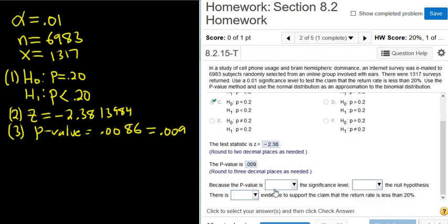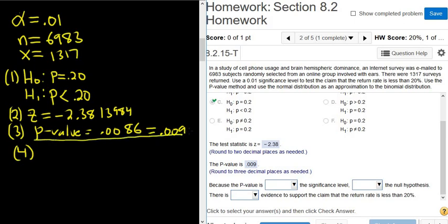Now we have to fill in the blank here. So in step four, we have to look at two things. We have to look at the P value, which is right here, .009. And we have to look at the alpha. So if the P value is smaller, we reject. So it is. The P value is smaller than alpha, so we reject H sub 0.